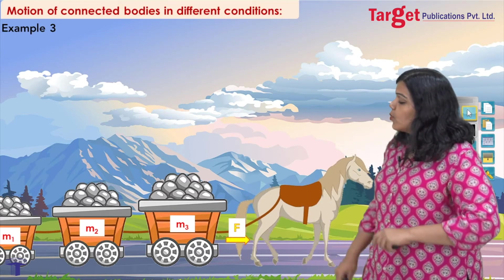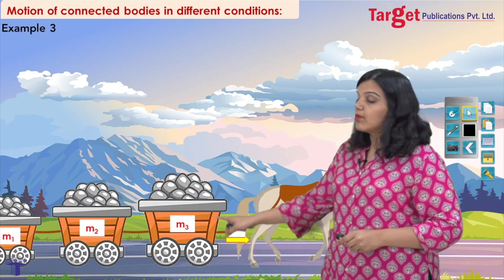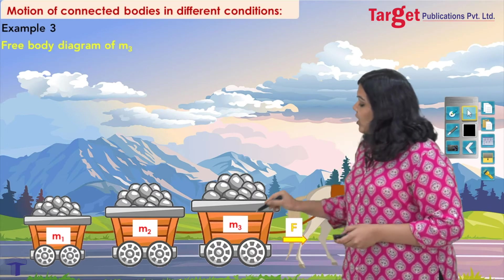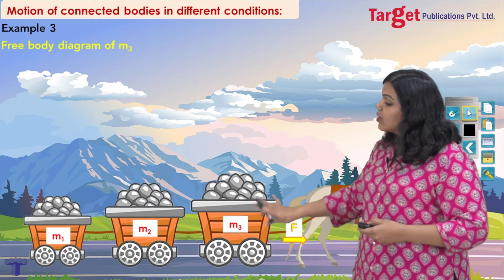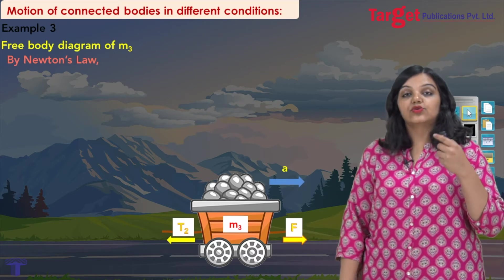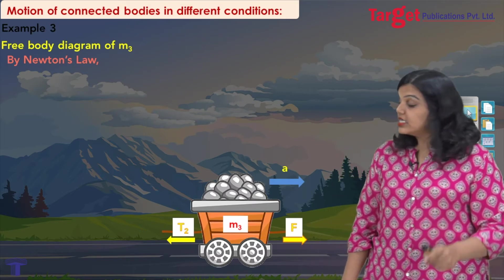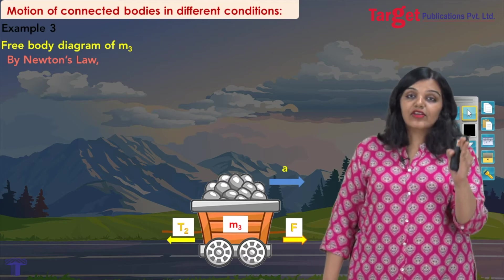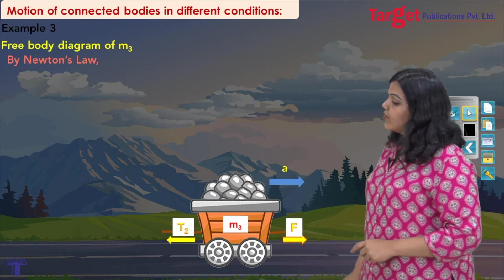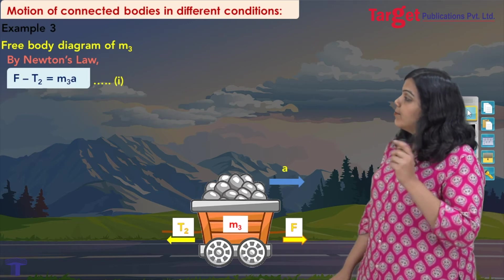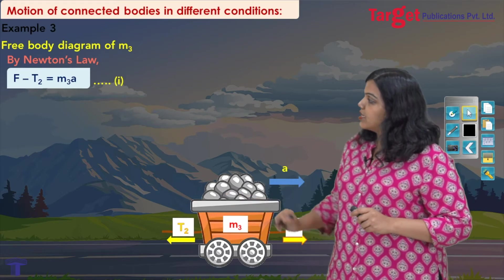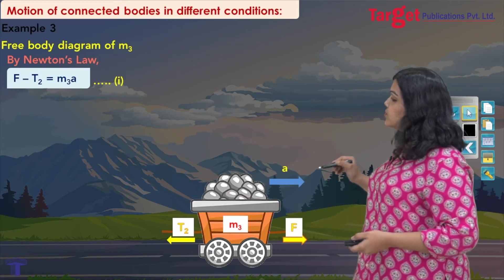The externally applied force F is acting on object m3, pulling it to the right, so all objects move to the right. Looking at the free body diagram of m3 first: the forces acting on m3 are the externally applied force F to the right, and the tension to the left — but I am calling it T2, not T, because this tension is different from the tension in the other string. Applying Newton's law: F minus T2 equals m3a. F is positive (acts right), T2 is negative (acts left), and m3a is positive (moves right).